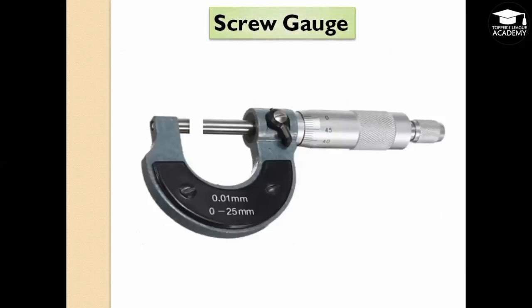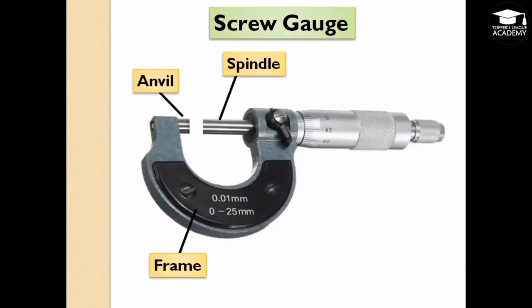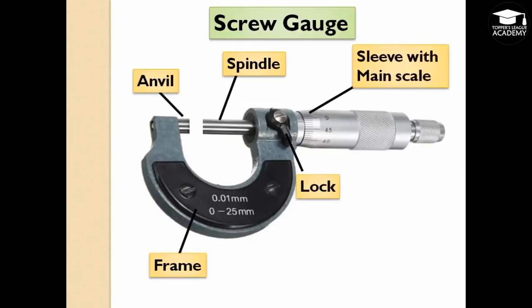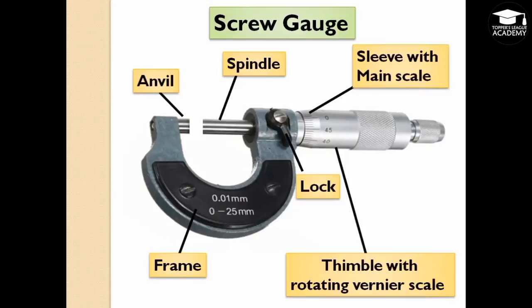A screw gauge is another instrument for measuring very small lengths. It consists of an anvil, a frame, a spindle, a lock, a sleeve with main scale, a thimble with rotating vernier scale, and a ratchet knob at the end.